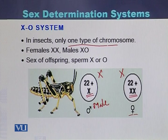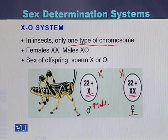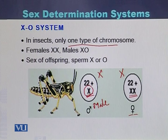The grasshopper is an example of the X0 system. In case of a female grasshopper, there will be 22 pairs of autosomes and one pair of sex chromosomes — two copies of the X chromosome. While in case of a male grasshopper, there will be 22 autosomes along with a single X chromosome.